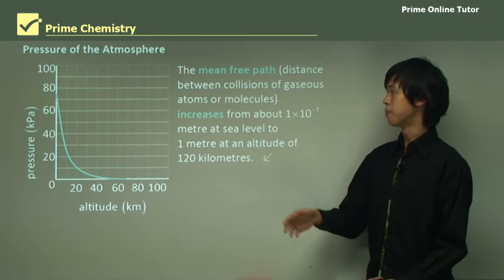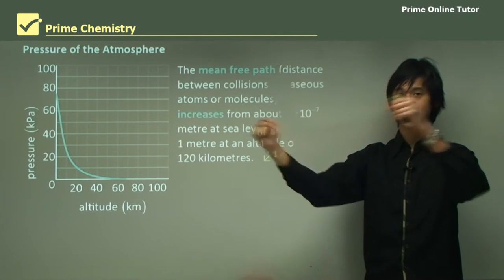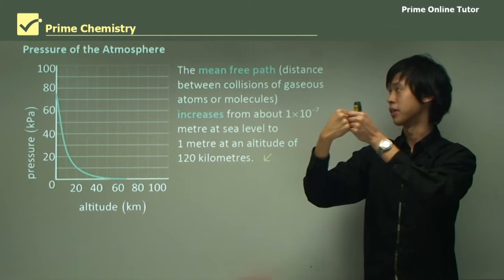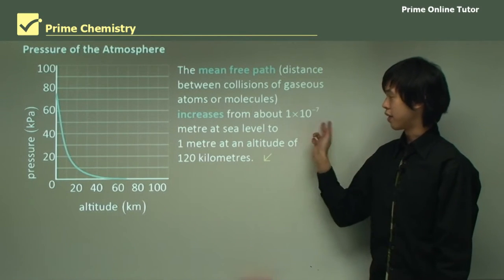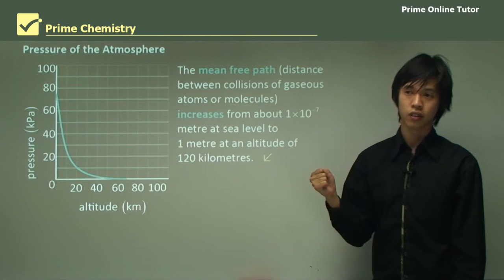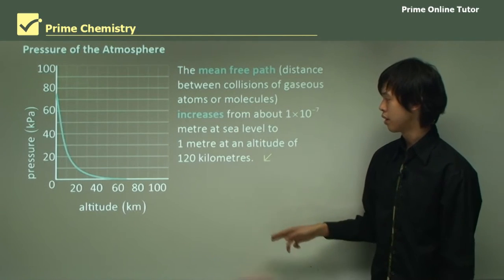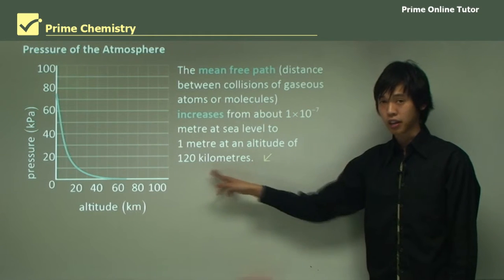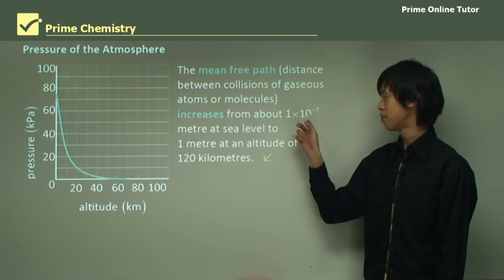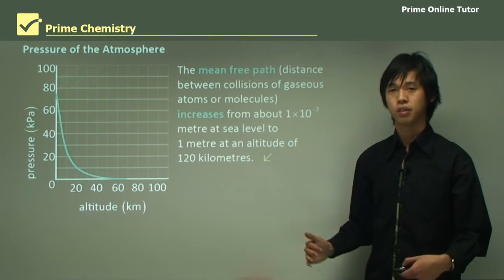Another way of looking at this is the mean free path — the distance a particle travels before colliding with another particle through random motion. At sea level, this is 10⁻⁷ meters, meaning an atom or molecule travels only 0.1 micrometers before striking another. At an altitude of 120 kilometers, the mean free path is 1 meter — ten million times larger than at sea level. Pressure is then reduced based on this mean free path.